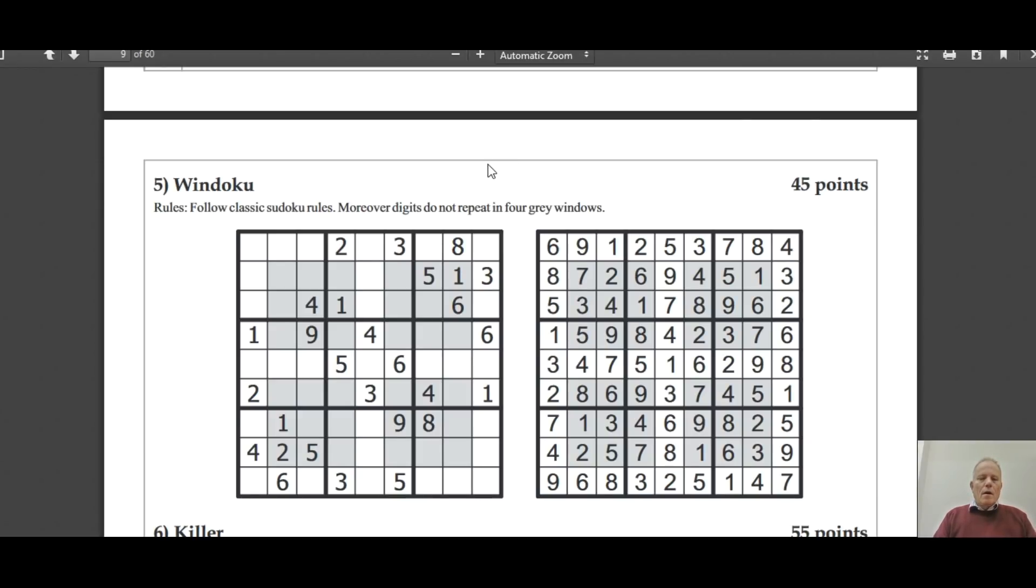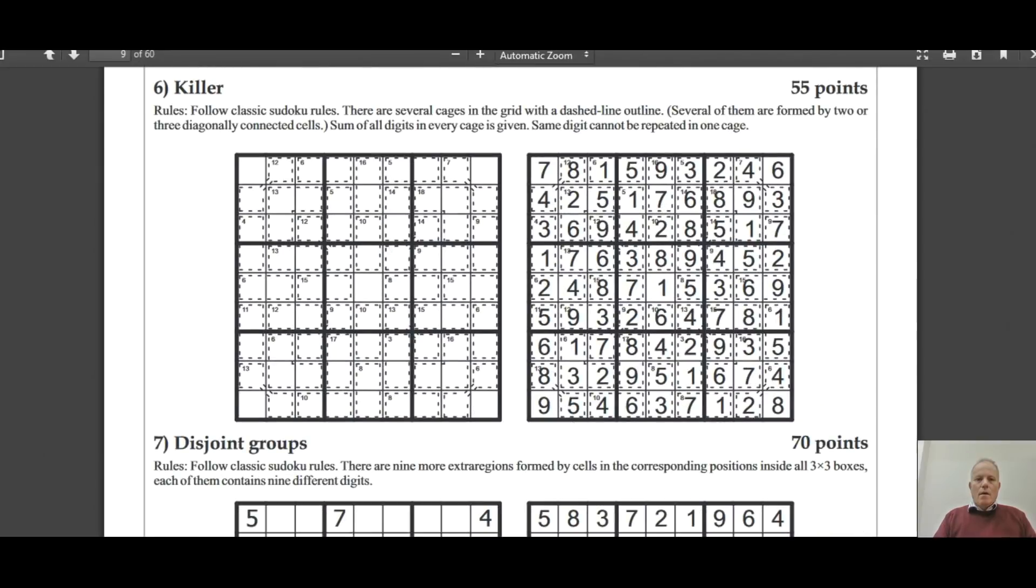This one is another classic - it appears in a number of newspapers in the UK occasionally as well - Windoku, where there are some extra regions always in these specific places, as though they were windows in a house or something. Those extra regions, the little gray regions, must contain all of the numbers from one to nine as well. Killer, which obviously we do know about, although in the world sudoku variants there can be squares knotting cages within the grid, and in fact here they've even got little diagonal lines joining some of the cages, which we're not used to seeing in most standard format.